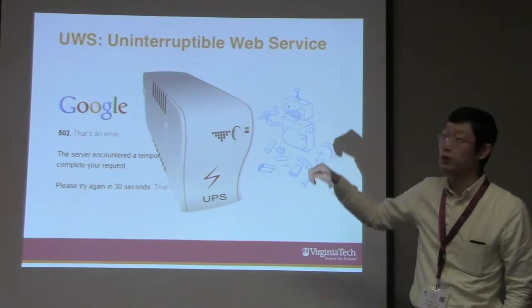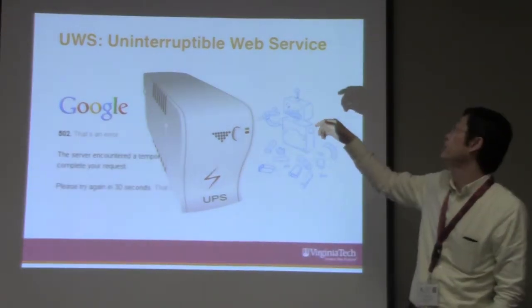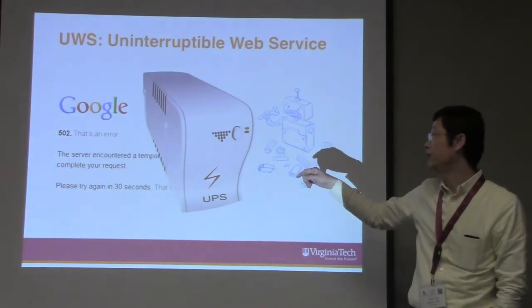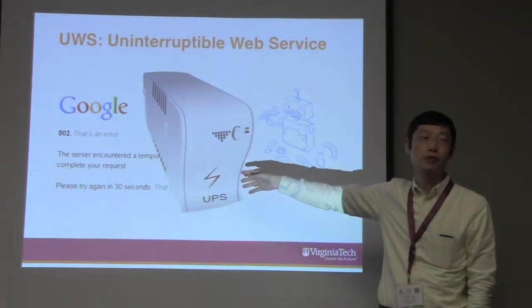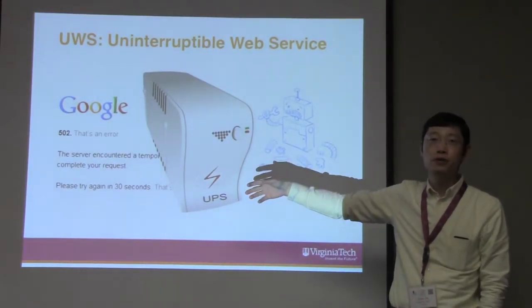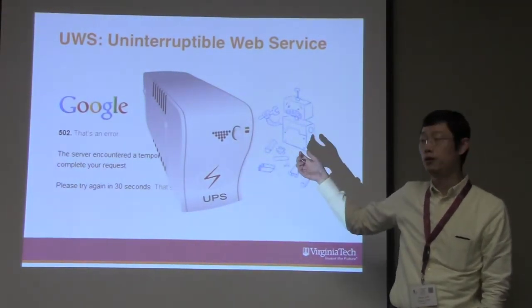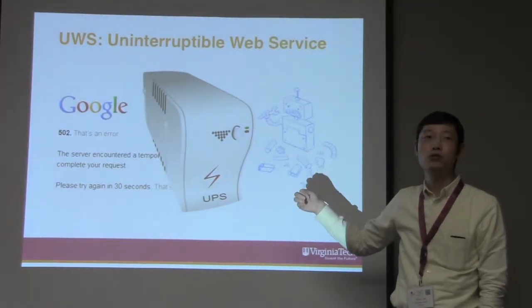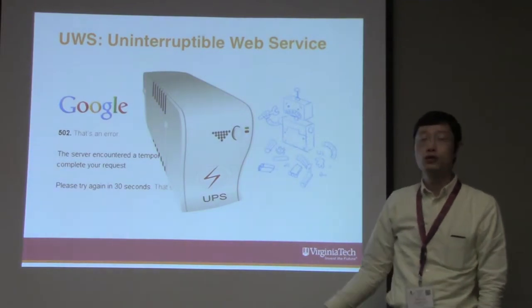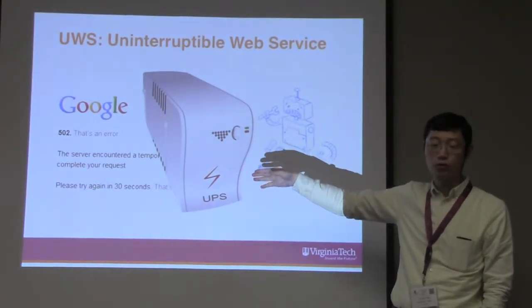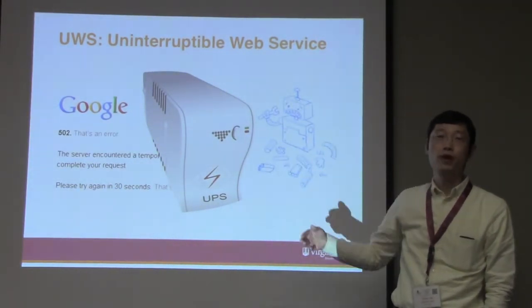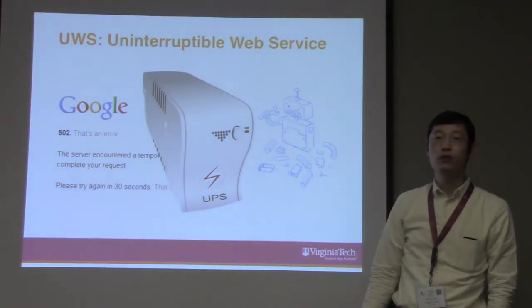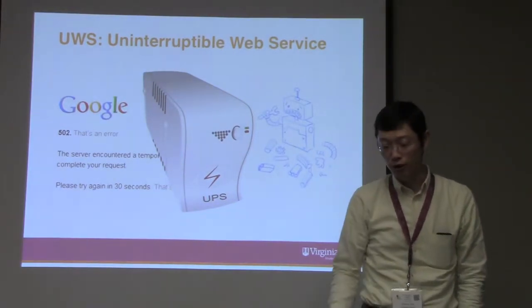What is the UWS case? We call it the Uninterrupted Web Service. The idea behind this service is something like a UPS type of thing behind the web service. Whenever you have a web interruption, mostly a server issue, you will use the Transactional Web Archive as the battery of this UPS. We're taking advantage of Transactional Web Archive to help a webmaster get their uptime a little bit better.